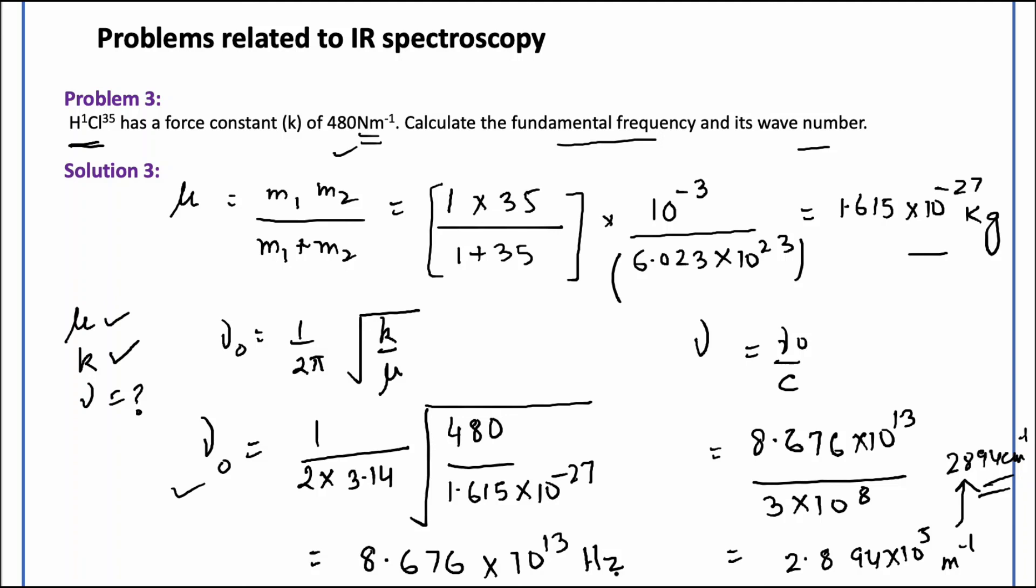So it will be 2894 centimeter inverse. This is the wave number. We represent the wave number as nu bar also, so you can write nu bar, it's one and the same thing.